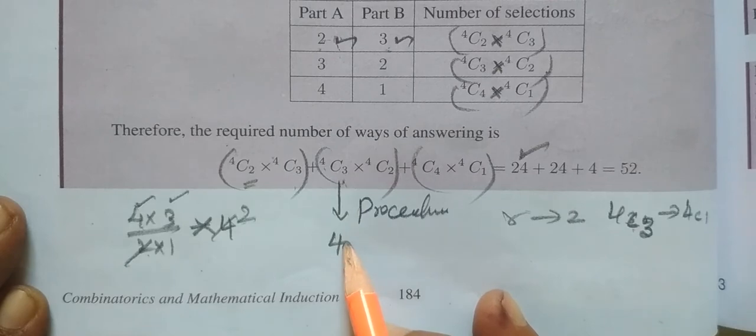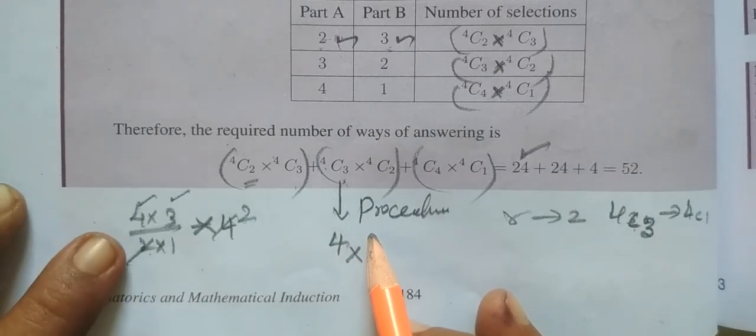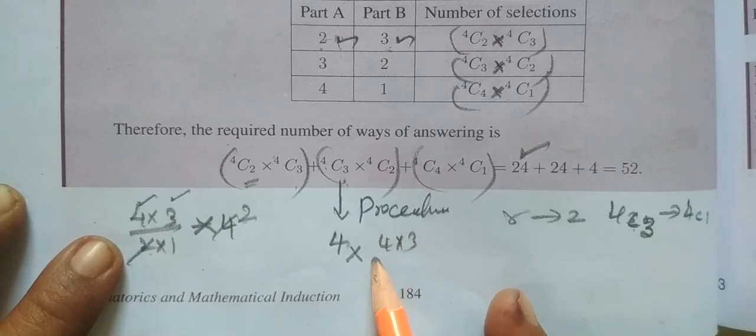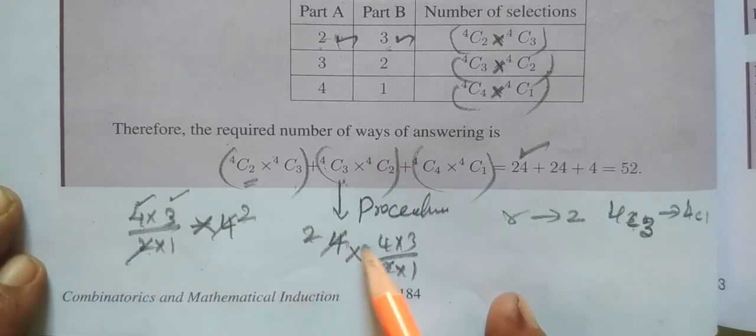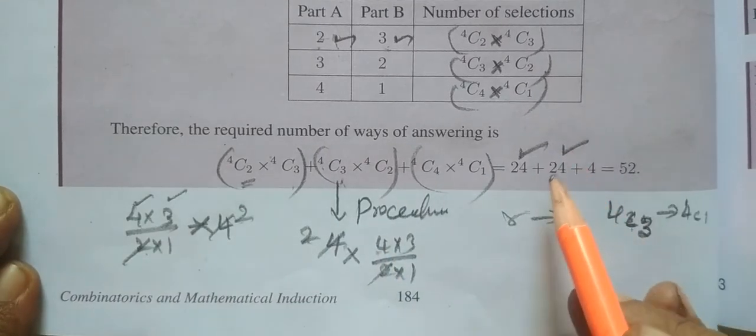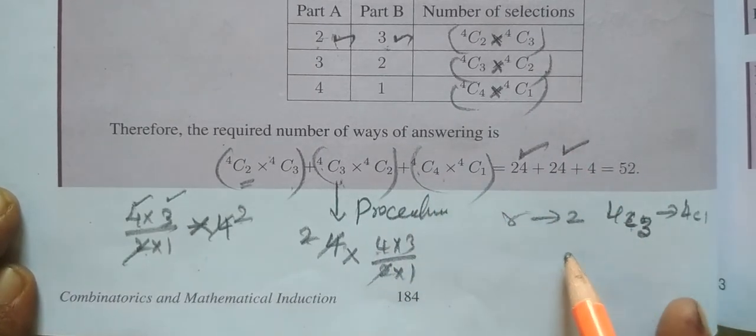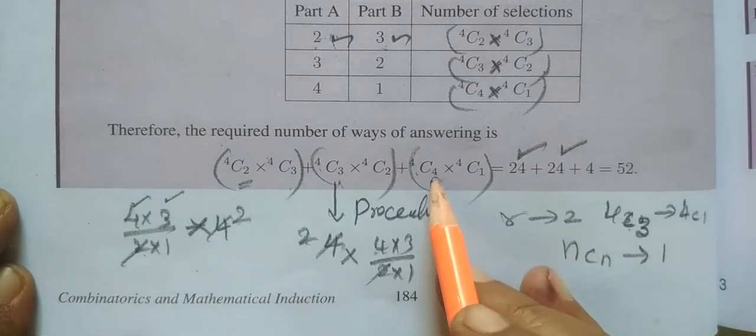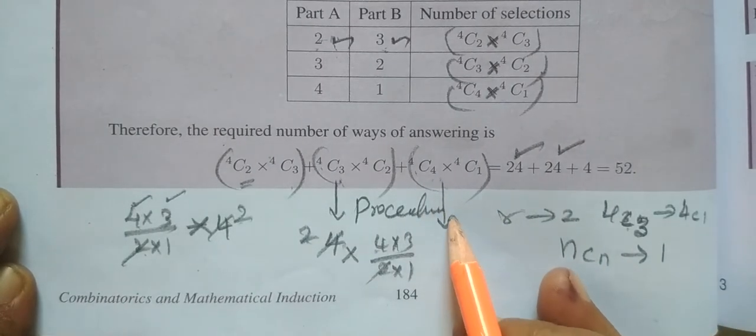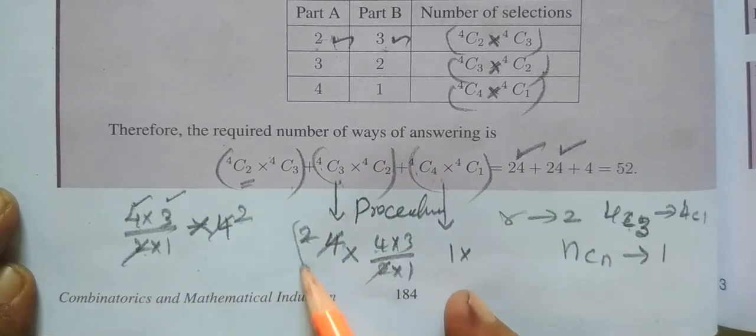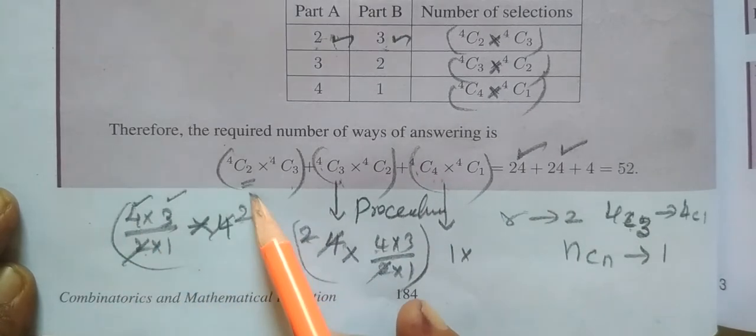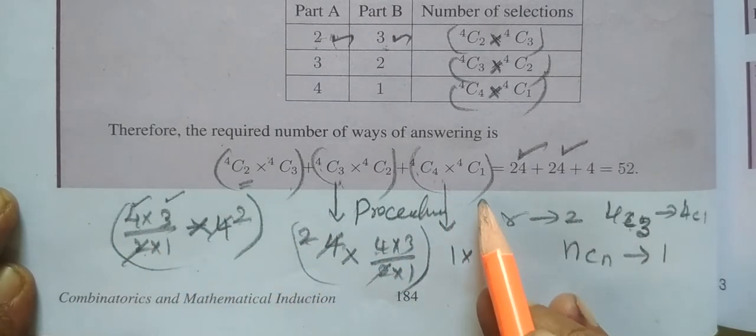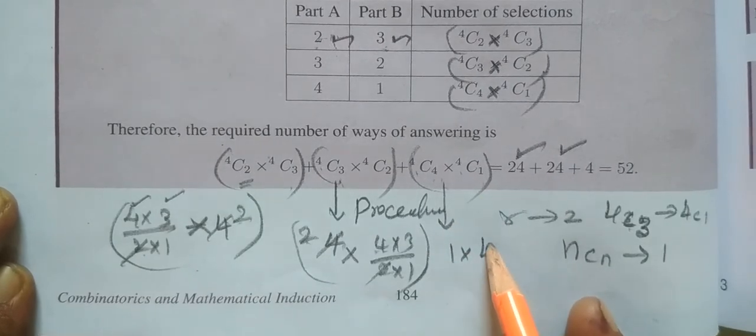4C3 equals 4. 4C2 equals 4 into 3 by 2 into 1. It is cancelled and the answer is 6. 4C4 equals 1, using the formula.